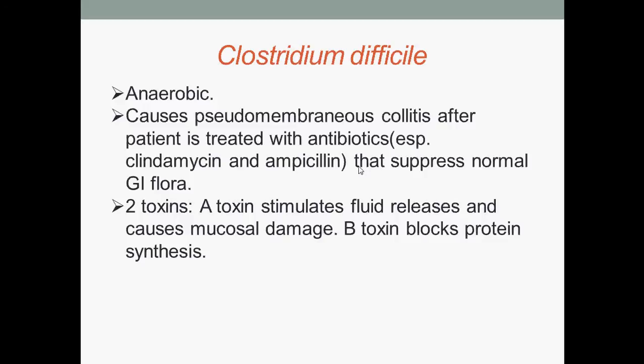Toxic megacolon, or megacolon toxicum, is an acute form of colonic distension characterized by a very dilated colon, accompanied by abdominal distension, bloating, and sometimes fever, abdominal pain, or shock. Two toxins are involved: the A toxin stimulates fluid release and causes mucosal damage, while the B toxin blocks protein synthesis.